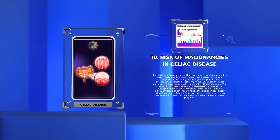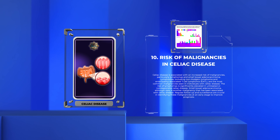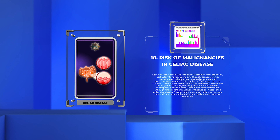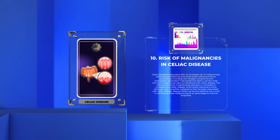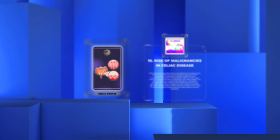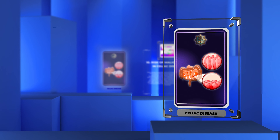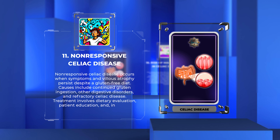Small bowel adenocarcinoma, although rare, is another malignancy that has been associated with celiac disease. Regular follow-up and surveillance are crucial in identifying these malignancies at an early stage to improve prognosis.